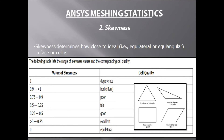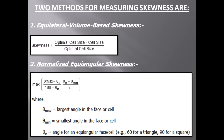Now let's talk about how the solver calculates skewness in ANSYS meshing. There are two methods for measuring skewness. Number one is equilateral volume-based skewness. The formula is: optimum cell size minus cell size, divided by optimum cell size. This method calculates the area of the cells and is especially applied for triangles and tetrahedrals. The second method is normalized equiangular skewness, with the formula: maximum of (theta_max minus theta_e) divided by (180 minus theta_e), or (theta_e minus theta_min) divided by theta_e.